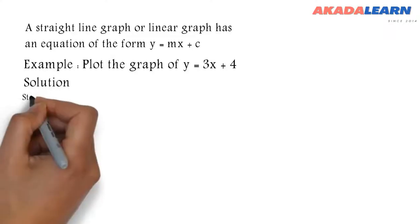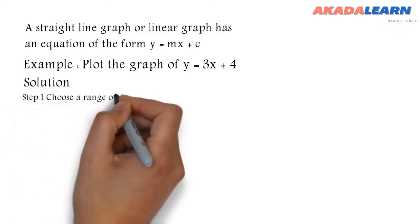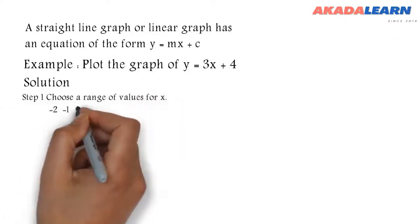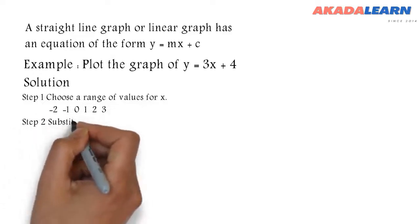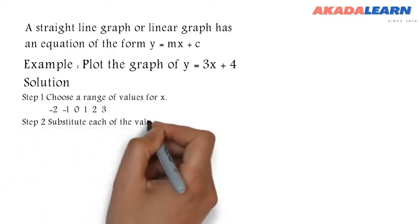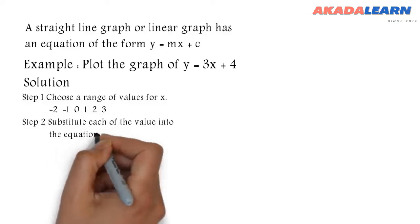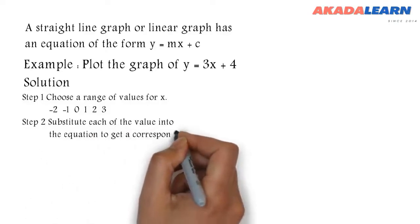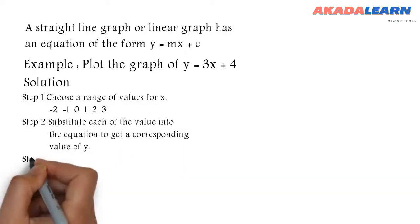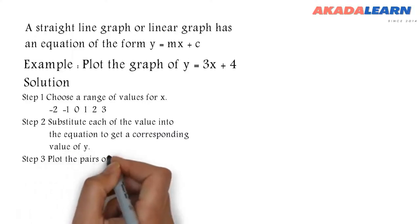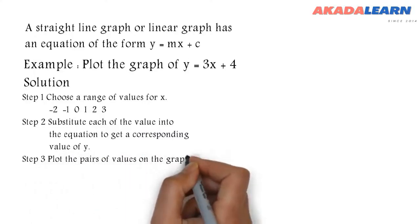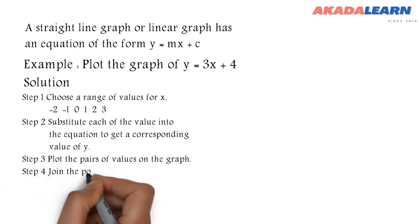The first step is we are going to choose a range of values for x. We choose from -2 to 3. Now we substitute each of these values into the given equation to get our corresponding value of y. The next step is we plot the pairs of values on the graph, then we join the points together.